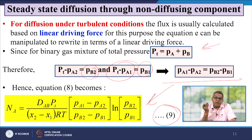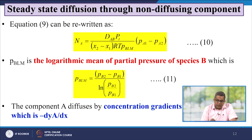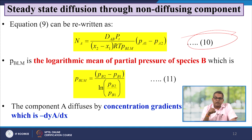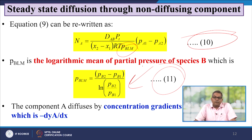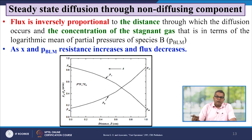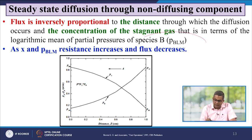Based on the previous aspect, equation 9 can be rewritten as equation number 10: NA equals (DAB·PT/(x2−x1)·R·T·pBLM)·(pA1 − pA2), where pBLM is the logarithmic mean of the partial pressure of species B, given as equation 11: pBLM equals (pB2 − pB1)/ln(pB2/pB1). The component A diffuses by the concentration gradient. Flux is inversely proportional to the distance and the concentration of the stagnant gas. As x and pBLM resistance increase, the flux decreases.